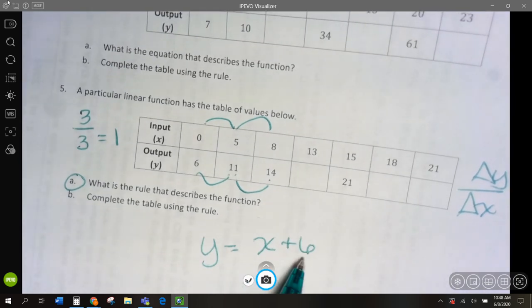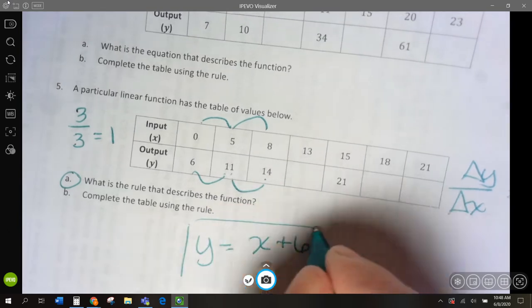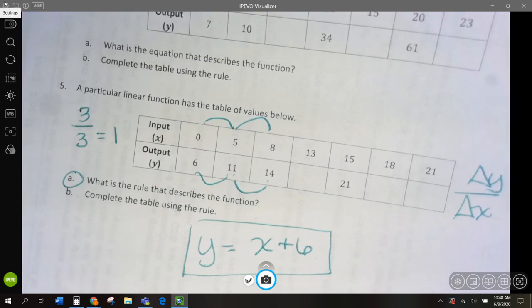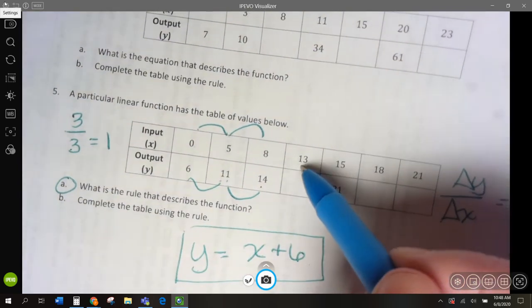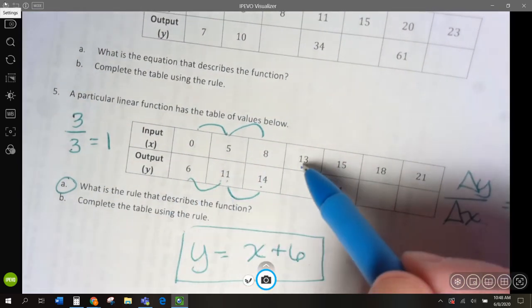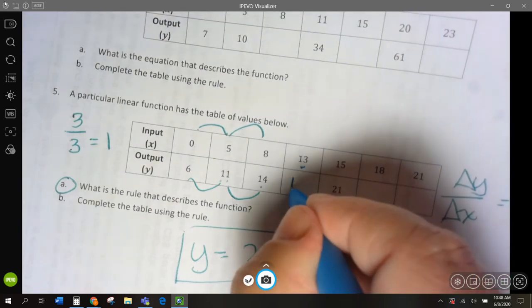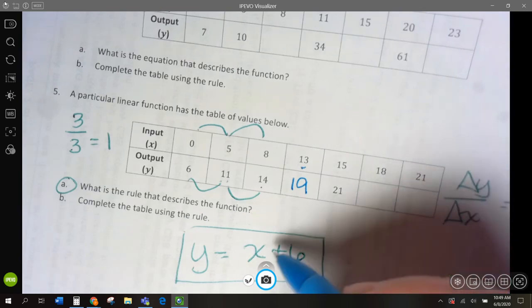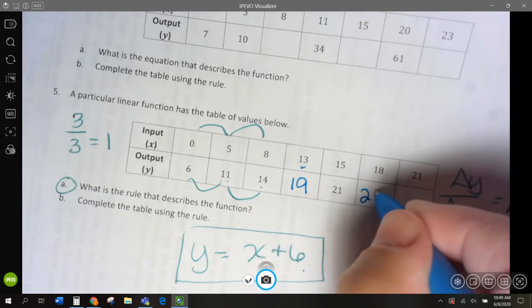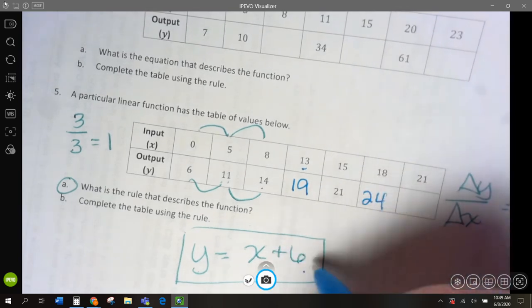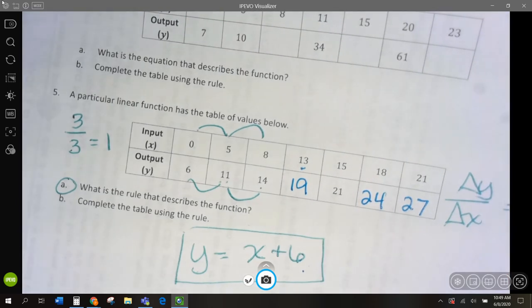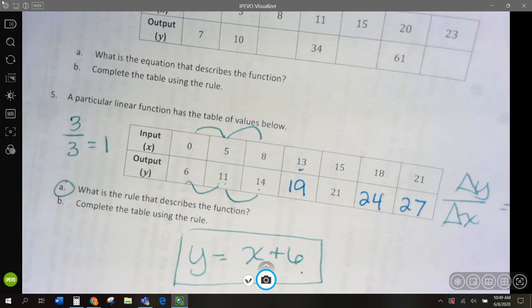y equals x plus 6. We took our slope, we multiply by x, by 1, and then add 6. So, let's complete this. 13 plus 6 is 19. 15 plus 6 is 21. 18 plus 6 is 24. 21 plus 6 is going to be 27.